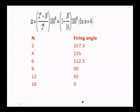This table gives different values of N and corresponding firing angles. If N equals 2, the firing angle is 157.5 degrees. If N equals 4, the firing angle is 135 degrees. If N equals 6, it is 112.5 degrees. For N equals 8, the firing angle is 90 degrees. When N equals 16, the firing angle becomes 0. By selecting the value of N, we can get the desired firing angle.